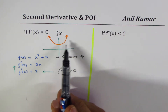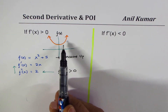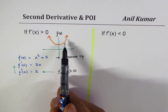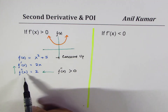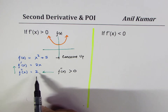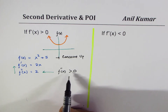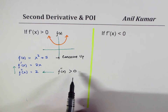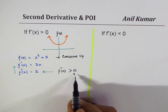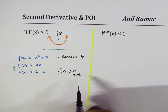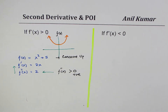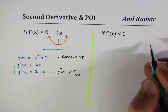All along the domain of this parabola the shape is concave up, and the second derivative is positive — greater than 0. So we can conclude: if the second derivative is greater than 0, or we can say it is positive, then the shape of the function is going to be concave up.